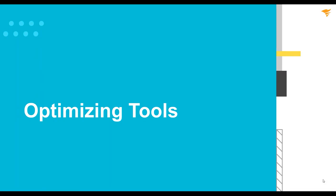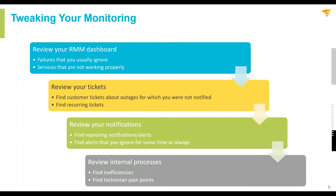Optimizing your tools is something you really want to take time to do, but on any given day you typically don't have time. Now that you can carve a little time, here's what I'd recommend. The first part is tweaking your monitoring. Look at your RMM dashboard — no matter what platform you use — and see what alerts come out. Look for things that you ignore and things that are not working properly: surveys that are misconfigured, erring out incorrectly, or things that are not necessarily failures but that you ignore because you don't care. Make a list of things to review.